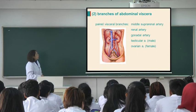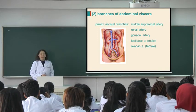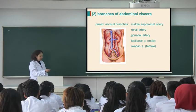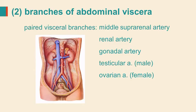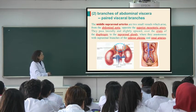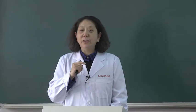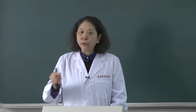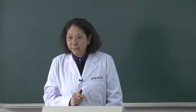Now let's study the paired visceral branches of the abdominal aorta. From superior to inferior, we have the middle suprarenal artery, the renal artery, and the gonadal artery. The gonadal artery is a general name: in males it is named the testicular artery, and in females it is named the ovarian artery. Look at this picture — who can tell me what this structure is named? The suprarenal gland. How about the shape of the suprarenal gland? Do both sides have the same shape or different shapes?